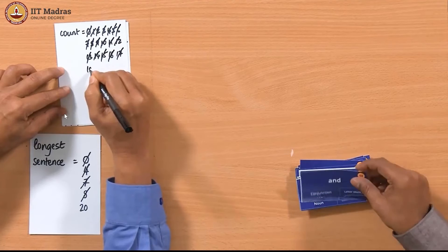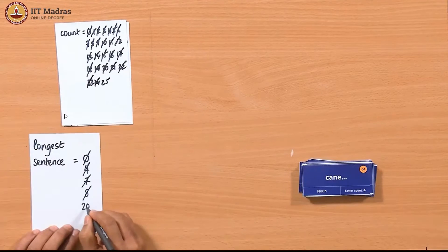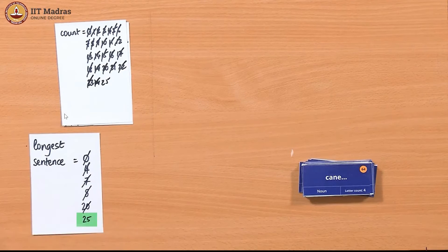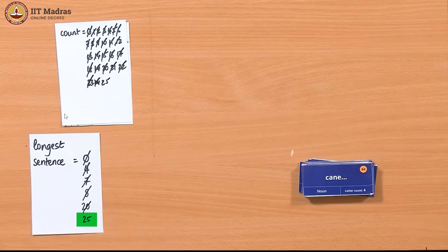In this way, at the end of iterating through the last card, we have the longest_sentence value equal to the number of cards in the longest sentence in the data set.